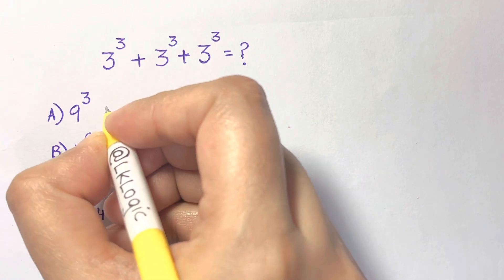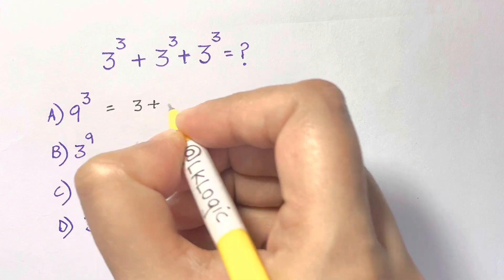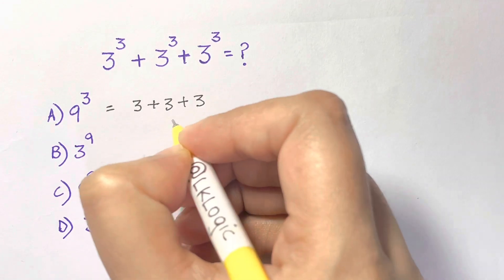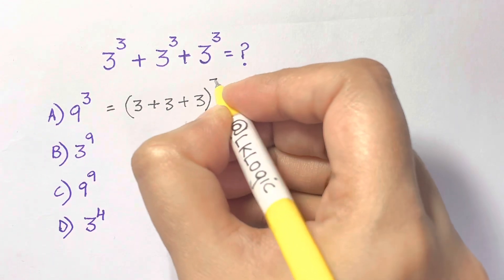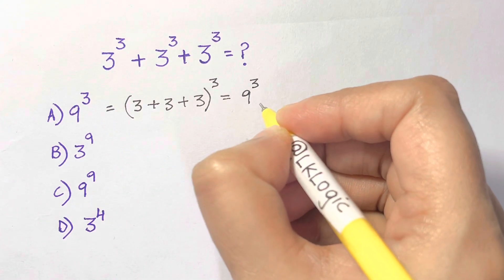Let's see what the first choice equals. You have the sum of the bases here: 3 plus 3 plus 3, and then to the power of 3, which is equal to 9 to the power of 3. But this is wrong.